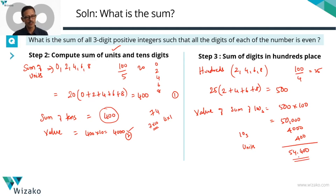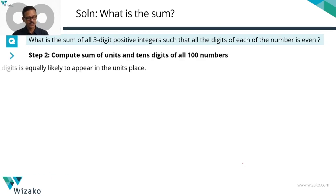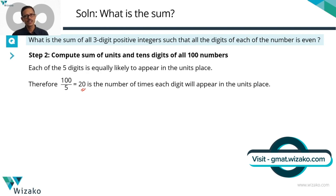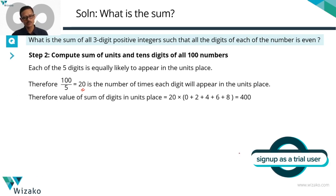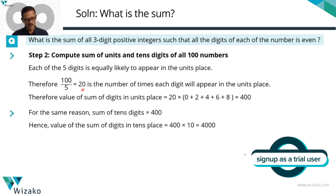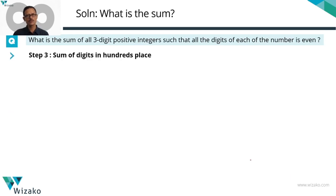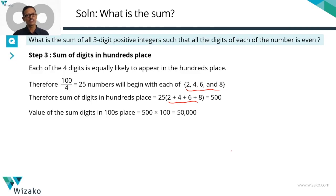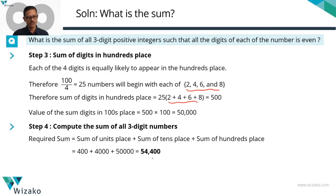To summarize: for the units place, all five digits are equally likely across 100 numbers, so each appears 20 times. Sum of units digits = 400; value = 400. Same for tens place: sum = 400, value = 4,000. For the hundreds place, only four digits are possible, each appearing 25 times. Sum = 500, value = 50,000. Total = 50,000 + 4,000 + 400 = 54,400.